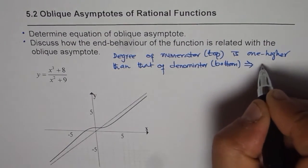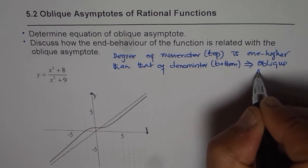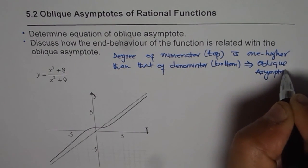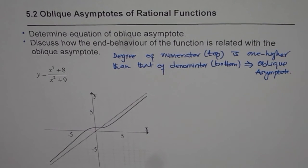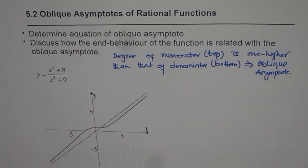It leads to oblique asymptote. So that is the basic condition. Now how to find the equation? Can you tell me that?